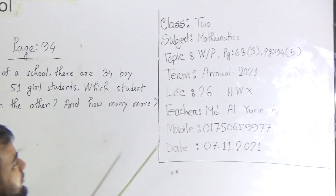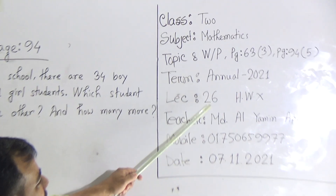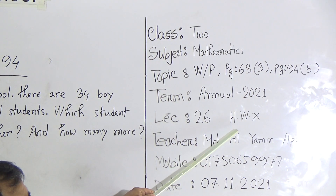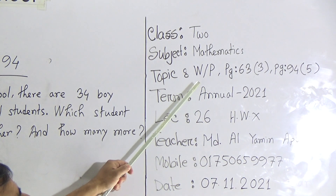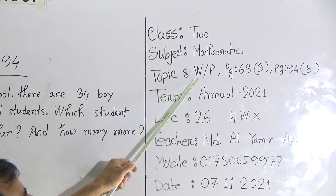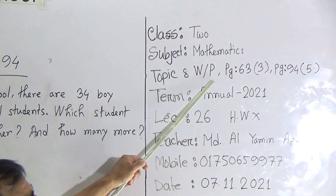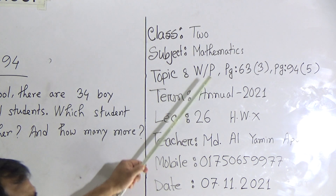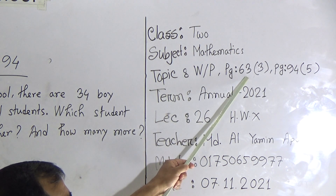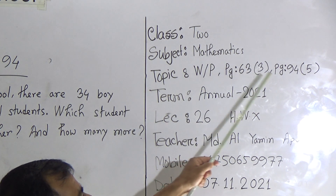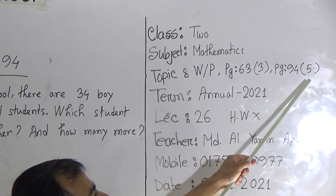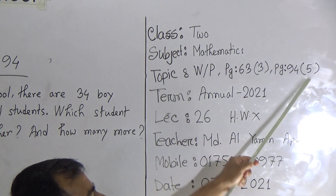Our today's lecture number is 26 and you have no homework today. Our today's topic is Word Problem — WP means word problem. We will solve two word problems today. From page number 63 we will solve question number 3, and from page number 94 we will solve question number 5.